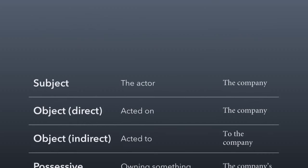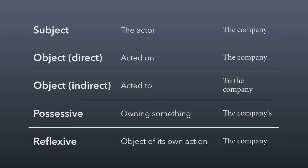Let me give you more clarity on this with some examples. These are the five most common cases used in English. The subject is the actor of the sentence. The direct object is the object being acted on in the sentence. The indirect object is acted to or toward in the sentence — notice we use a preposition to indicate the case there. The possessive is where the noun owns something, written with an apostrophe S. And the reflexive is when the noun is the object of its own action. Notice that for four out of five cases, the noun stays the same — it's only in the possessive that we change it by adding the apostrophe S.